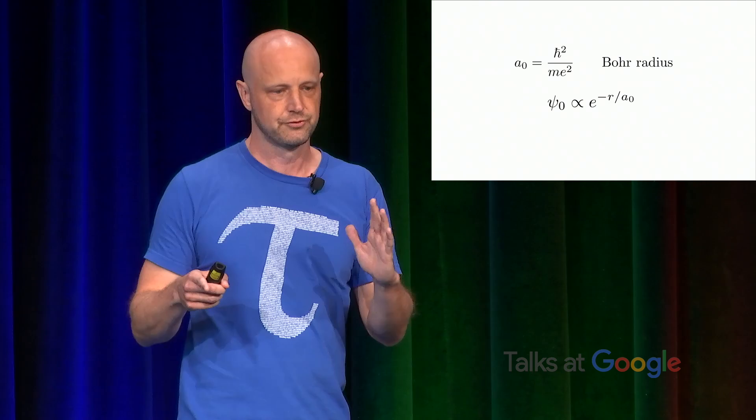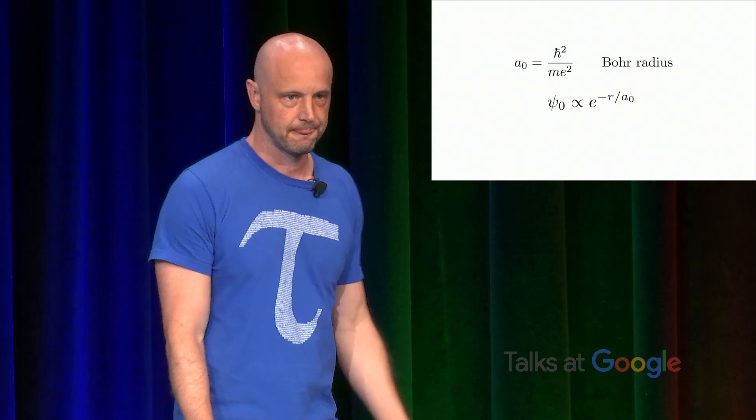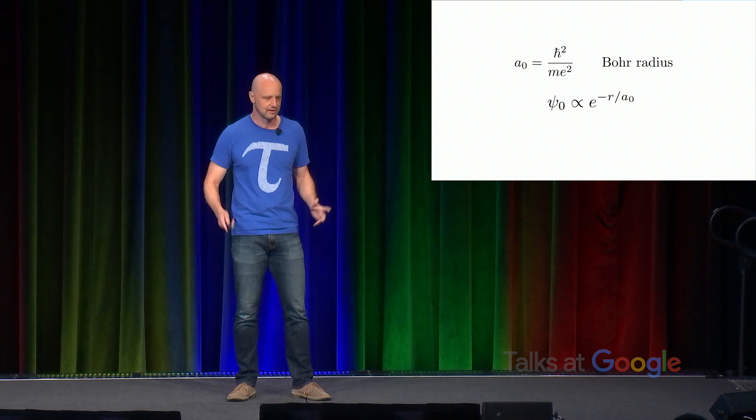And what this says is that it decays exponentially with a length scale set by the Bohr radius. All right. So if you've never seen this before, you might think, I don't understand what's going on here. If you've seen this before, you're like, yeah, yeah, I get it. But there's something you haven't noticed, which is the point.